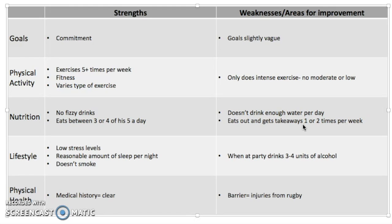Another nutritional weakness is that he eats out and gets takeaways three to four times a week. This could definitely be improved as takeaways can be very unhealthy, and having three to four a week adds up to as many as 16 a month, which is too many — especially as one of his goals is to lose weight. Eating that many takeaways isn't really going to help at all, so we'd want to seek to improve this area.